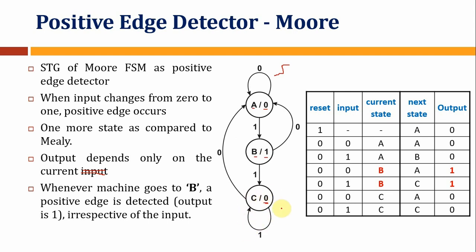If there is more than one consecutive 1, you remain in state B with output 0, because there is no new positive edge from 1 to 1. After a 0 comes, the machine goes back to state A. Then when a 1 comes again, the positive edge is detected and state B is reached. If we are in a sequence of 0s, we stay in state A. Once a 1 comes, the positive edge is detected. Then if a 0 follows, we go back to state A with output 0. This is how the machine works.